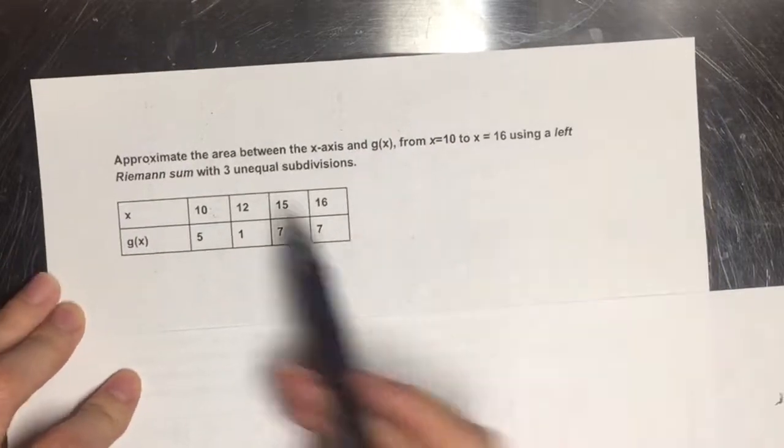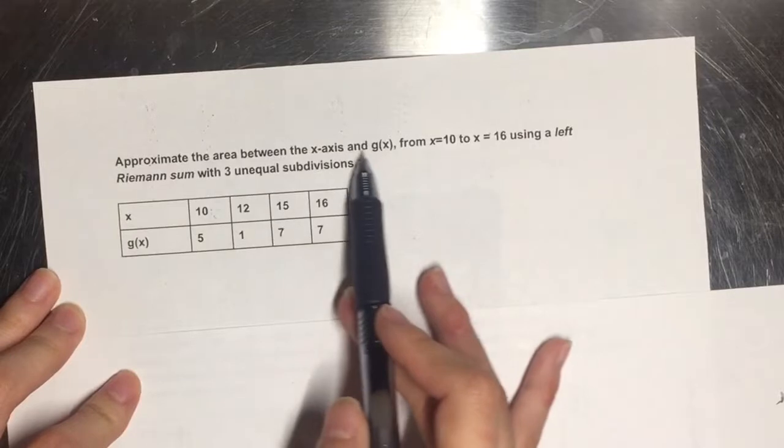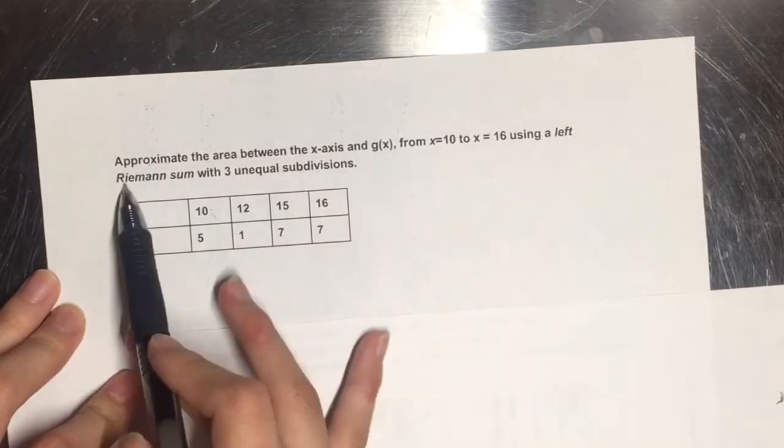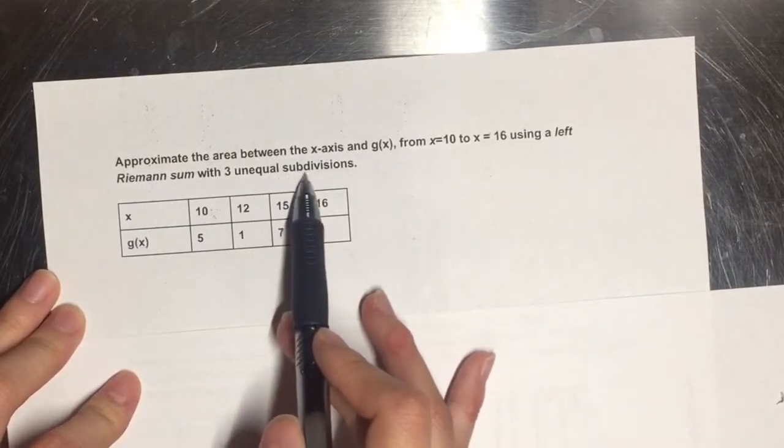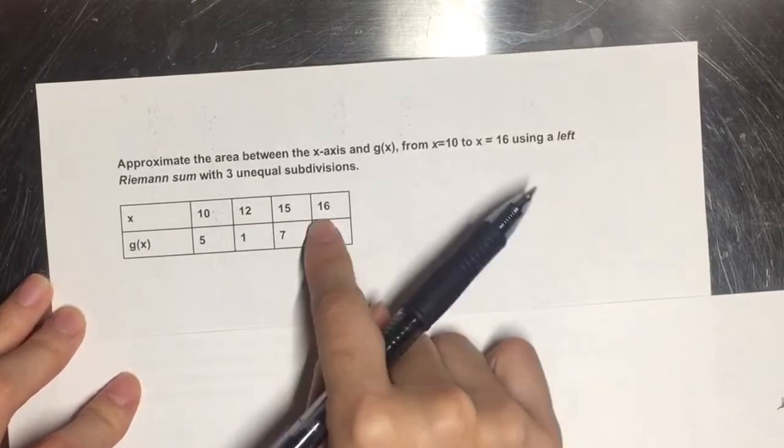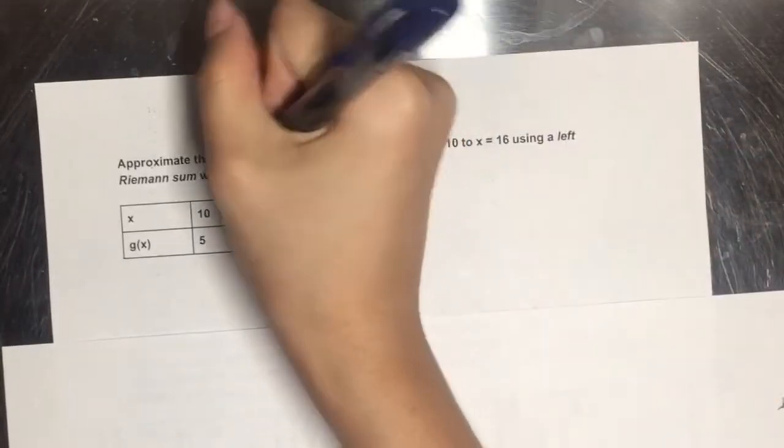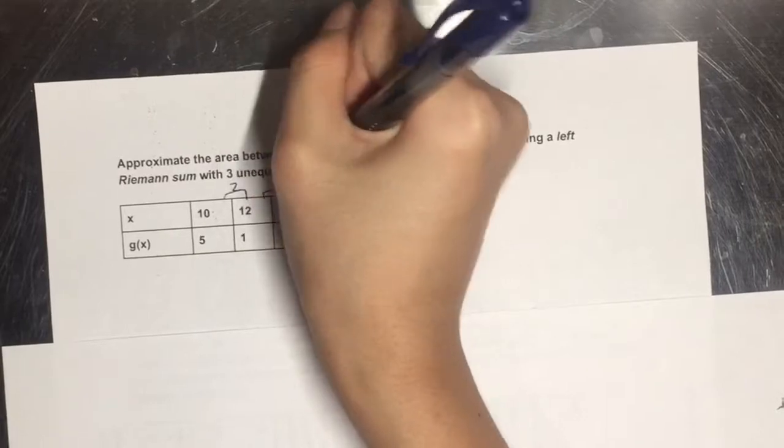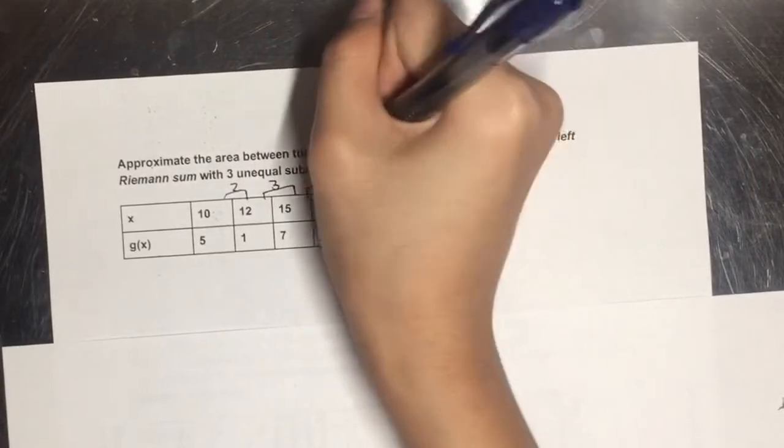Approximate the area between the x-axis and g(x) from x equals 10 to x equals 16 using an LRAM with three unequal subdivisions. So basically what they're asking is just an LRAM with different bases. First we're going to calculate the difference in bases, which is 2, 3, and 1.